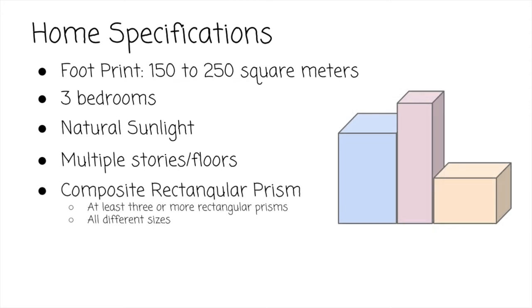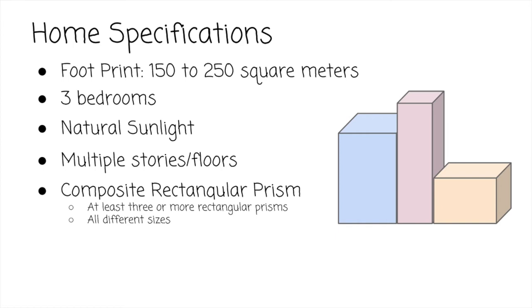We would like our home to be a composite rectangular prism. This means that the home is composed of two or more non-overlapping right rectangular prisms. I would like our home to be made up of at least three or more of these rectangular prisms that are all different sizes.